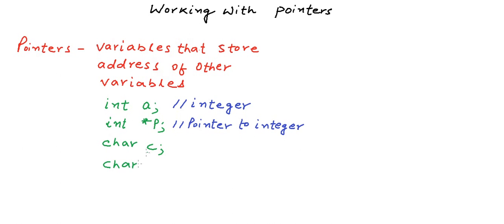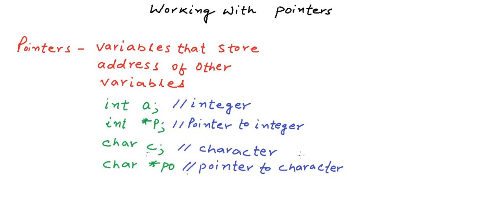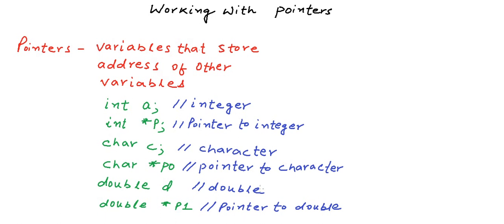The same syntax will be used — we put an asterisk sign and let's say the name of the variable is p0. So c is a character variable and p0 is a pointer to character. Similarly, we can have a pointer to double, and we can also have pointers to a user-defined structure or a user-defined class.